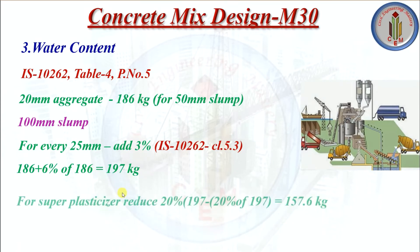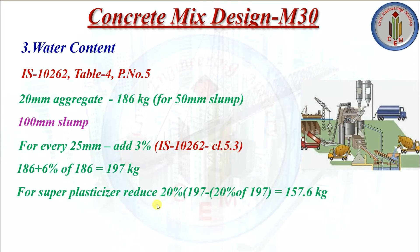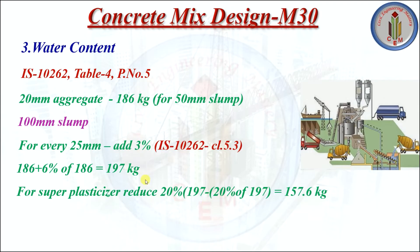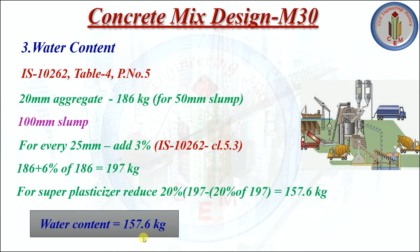For superplasticizer, the code states water content can be reduced by 20 to 30%. Using 20% reduction: 197 − 20% of 197 = 157.6 kg. So water content is 157.6 kg (or 157.6 liters).